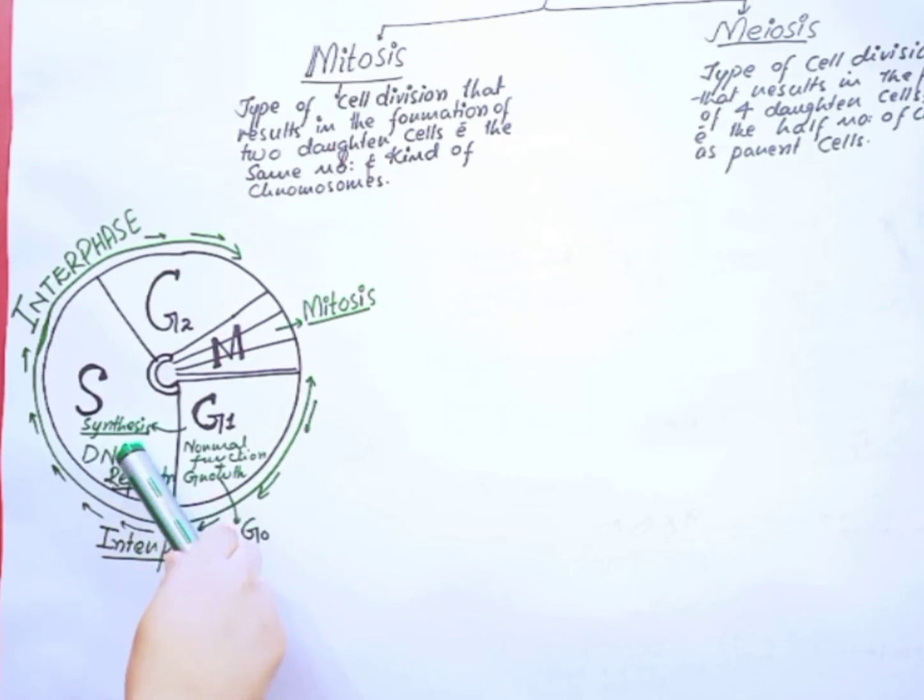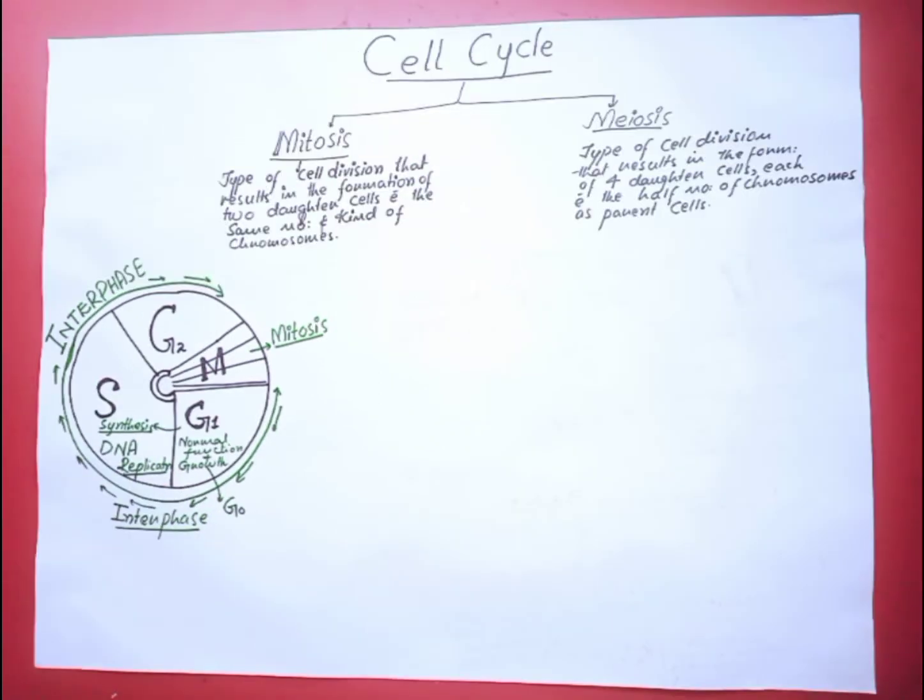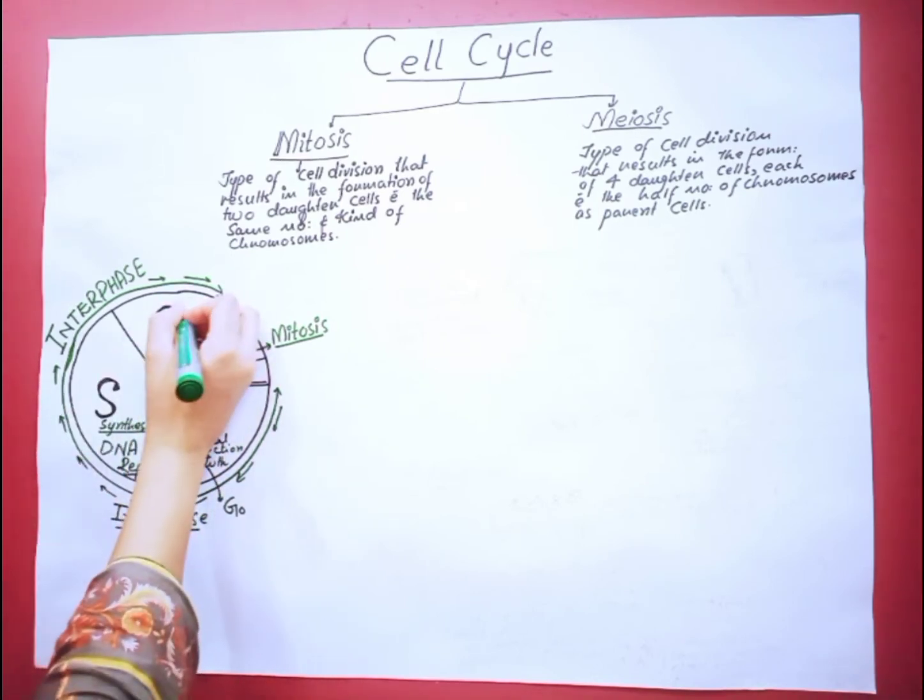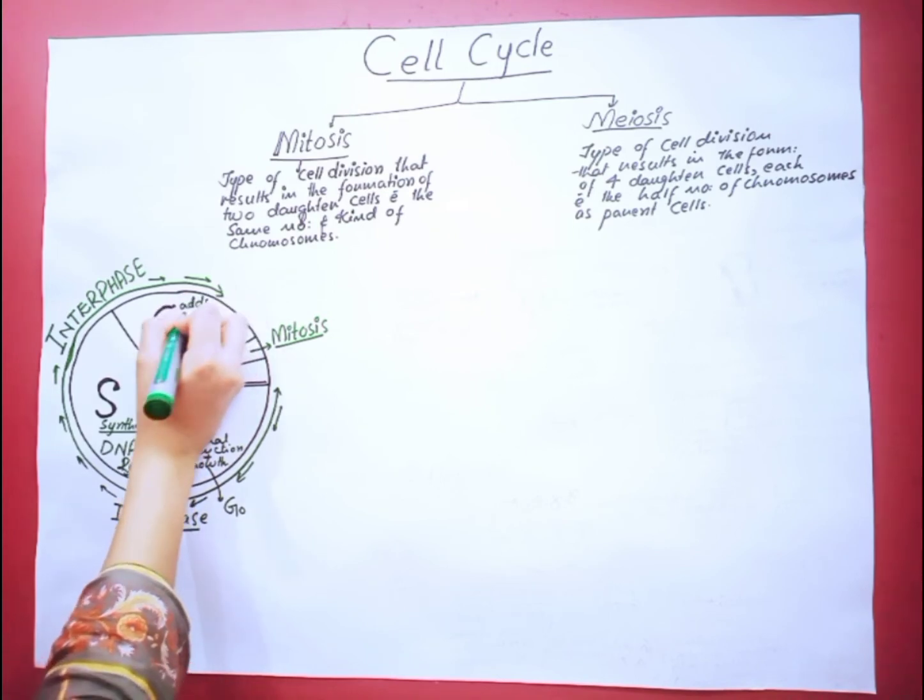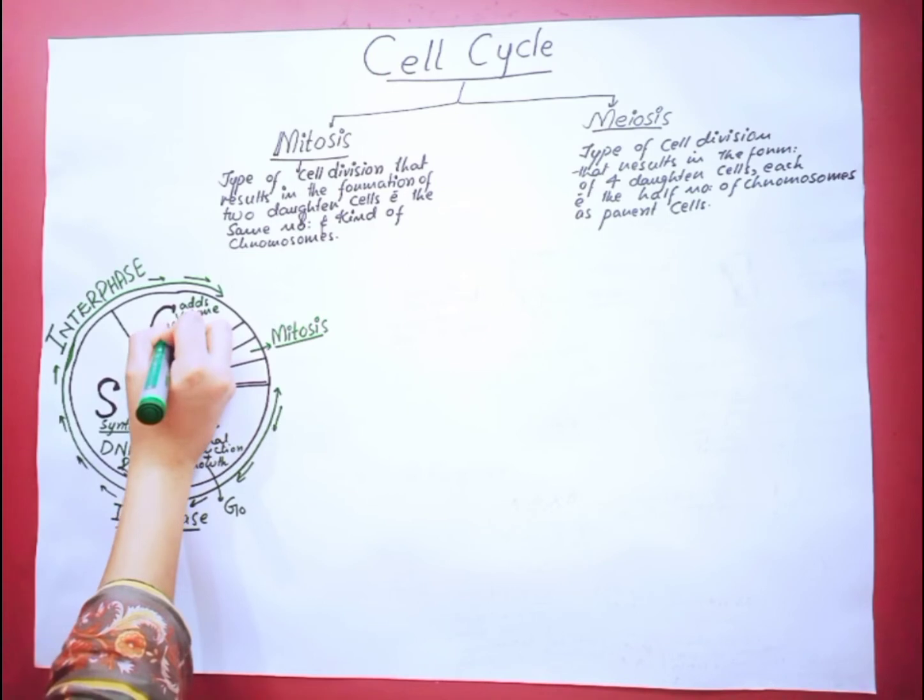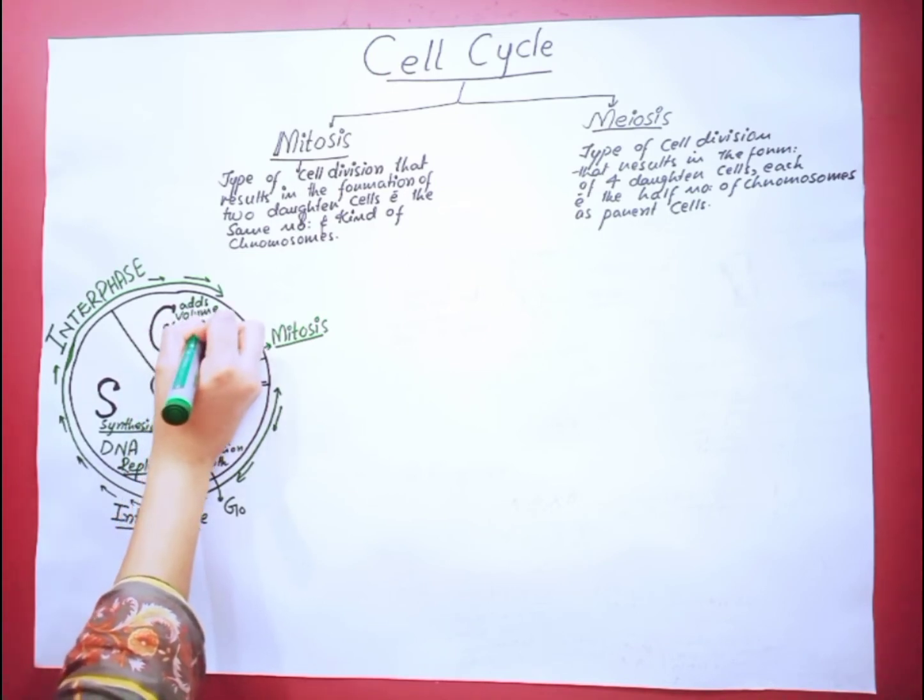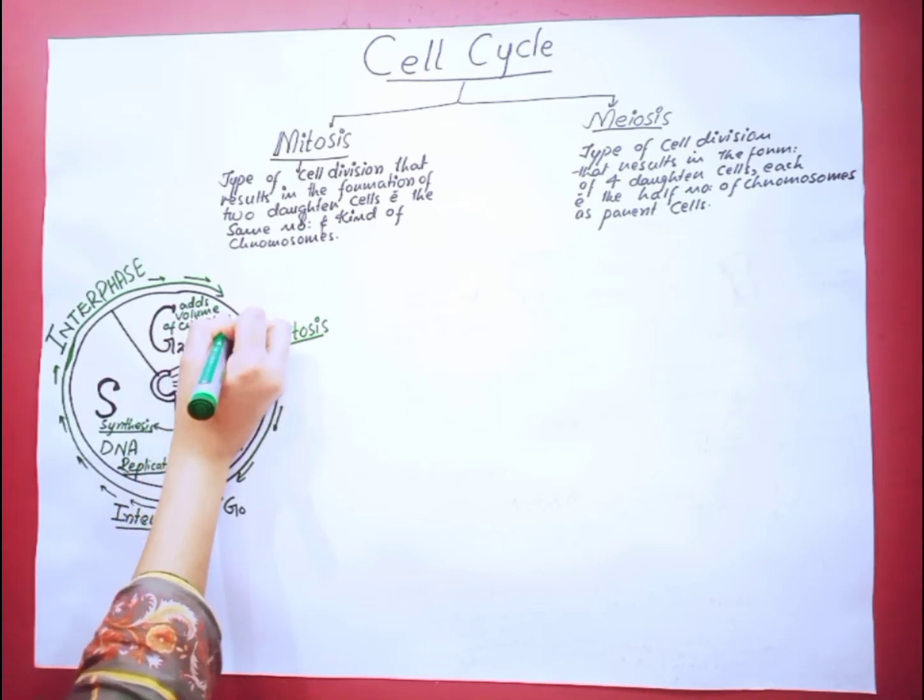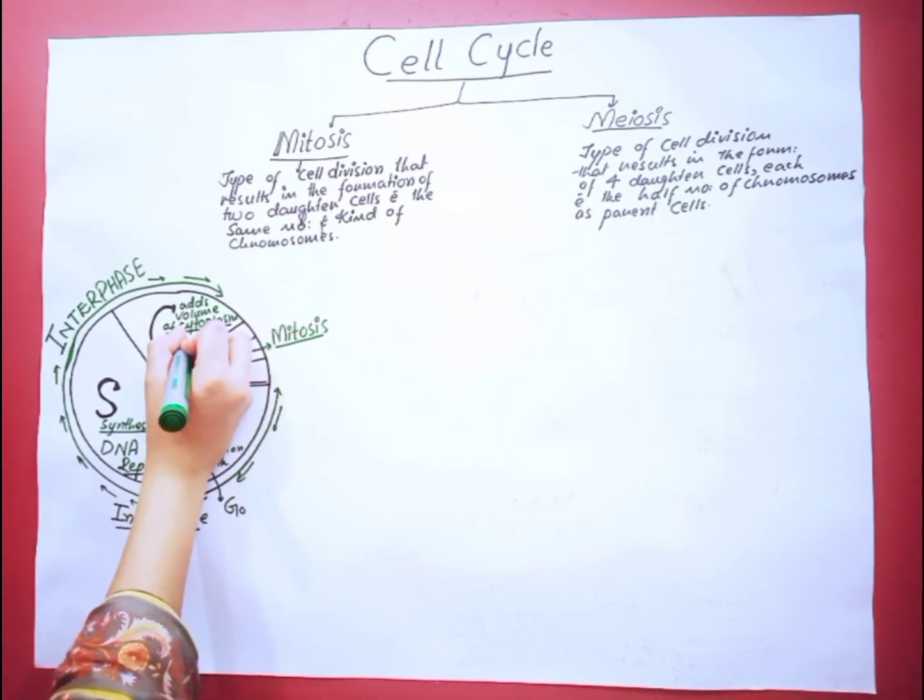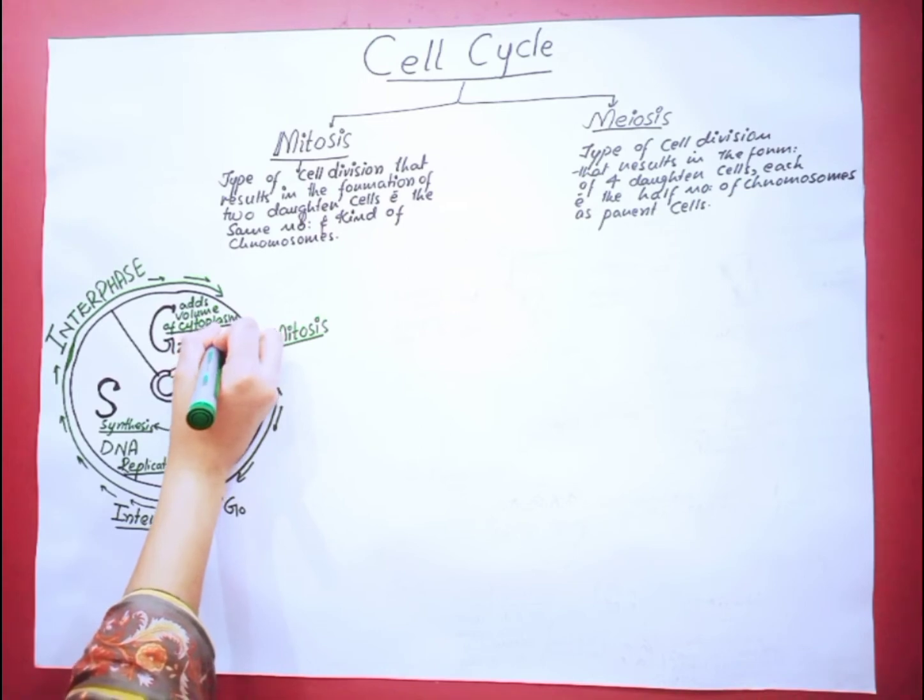In G2 phase or GAP2 phase, the cell adds to the volume of cytoplasm, and the replication of many important cell organelles except the DNA takes place within the G2 phase.